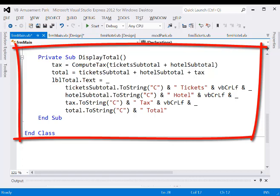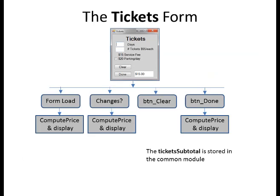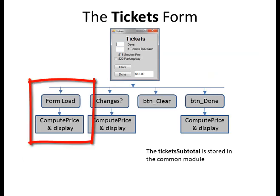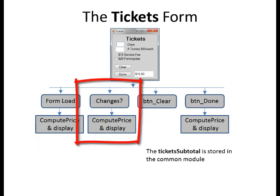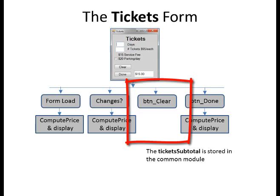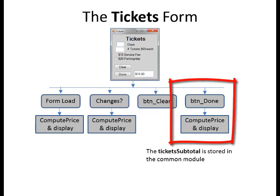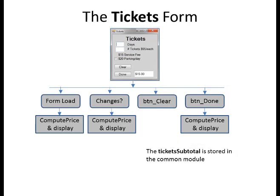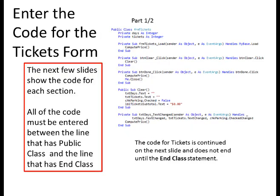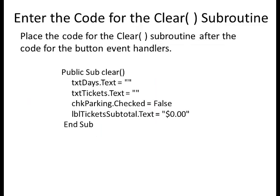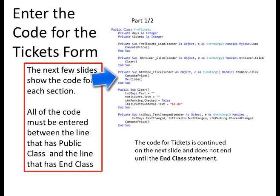Now let's look at the tickets form. It has four event handlers. The form load will call compute price, which starts at zero and displays it. We want to detect any changes to the text box for days, the text box for tickets, and the checkbox for parking — if any of these change, we recompute and display the price. Button clear clears everything. Button done recomputes, stores the result in ticket subtotal in the module, and returns to the main program. The tickets form has two private pieces of data: days as integer and tickets as integer.